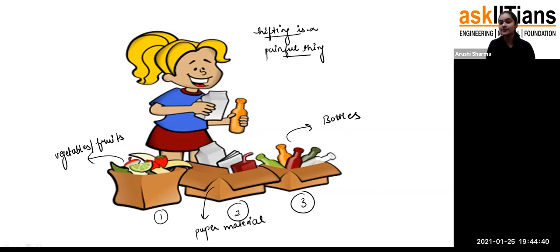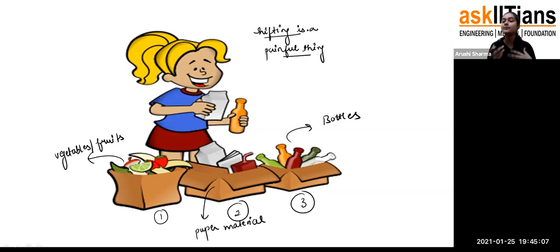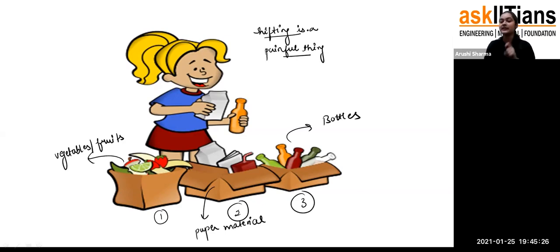So sorting is very important on the basis of properties. When your mother does packing, she has big cartons and she puts all the clothes in one box, books and copies in one box, kitchen material in one box. She is dividing all of them on the basis of their properties — if you keep clothes with kitchen material, they can get damaged by salt or spices. That's how the girl is doing great work, keeping fruits and vegetables, bottles, and paper each in separate boxes.